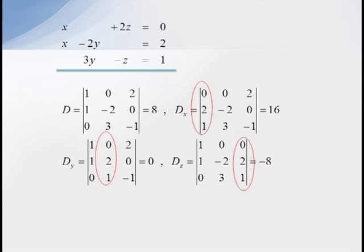Similarly, DY is found by replacing the second column with our constants, and the value of this determinant is zero. DZ is found by replacing the third column with our constants, and the value of DZ is minus 8.